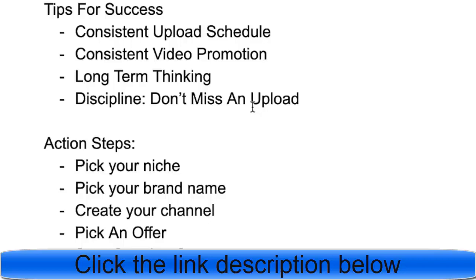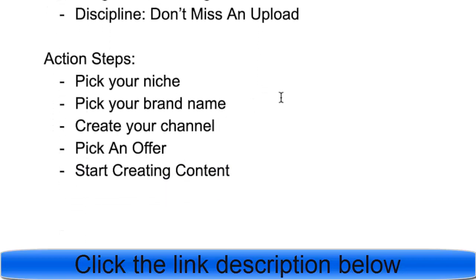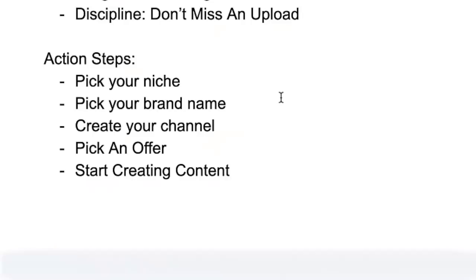If you commit to three videos per week, follow through no matter what. Prioritize and set time aside to get the work done. Action steps to summarize: pick your niche, pick your brand name, create your channel, pick an offer, and start creating content.